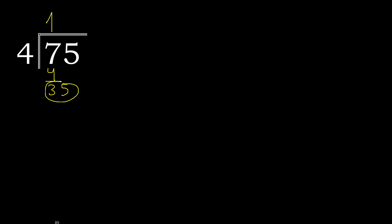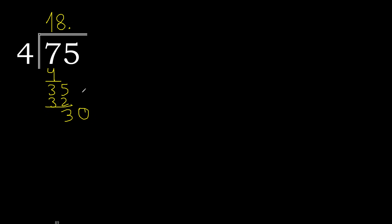Next we have 35. 4 multiplied by which number? 4 multiplied by 9 is 36 — that is greater. Multiplied by 8 is 32. Subtract: 35 minus 32 is 3. There is no next number, so we complete with 0. Here we place the decimal point — 0 point.